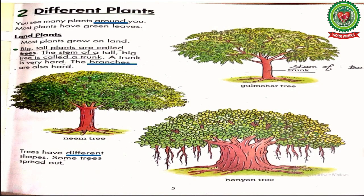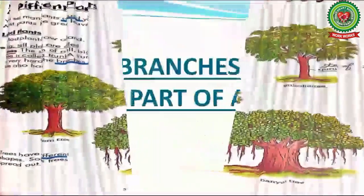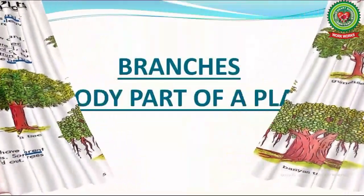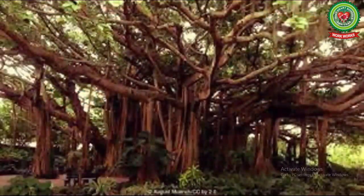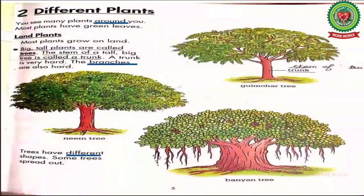As you can see in your book, the trunk of different trees is a very hard and strong part of the plant. The branches are also hard — write down the meaning of branches: woody part of a plant. Now, trees have different shapes — write down the meaning: various. As you can see in your book, different trees like gulmohar tree, neem tree, and banyan tree are all different in shapes and sizes.